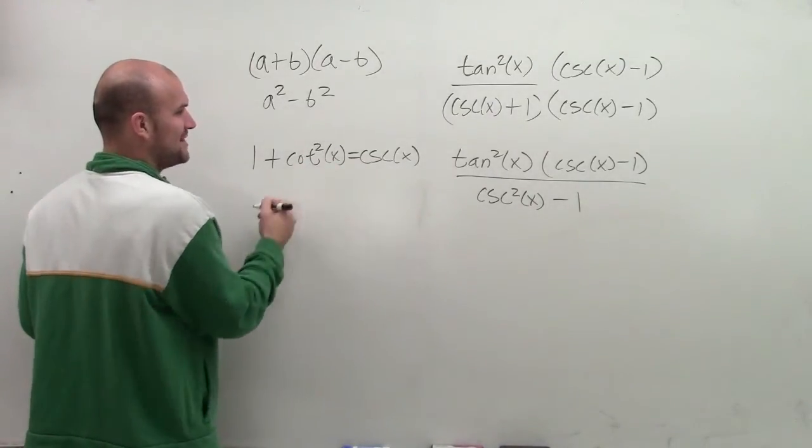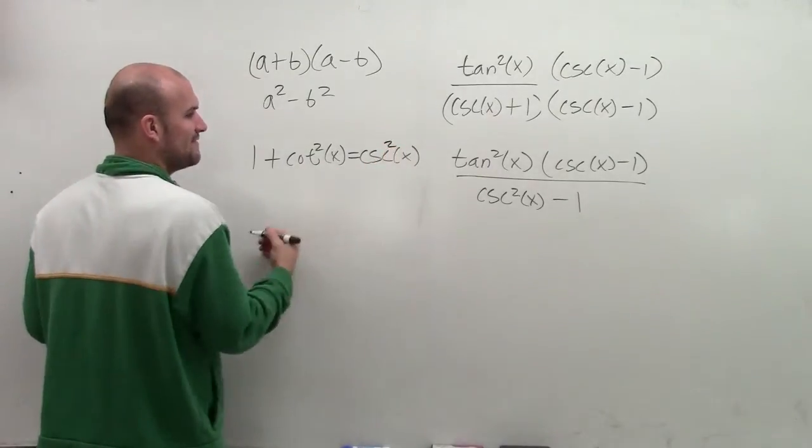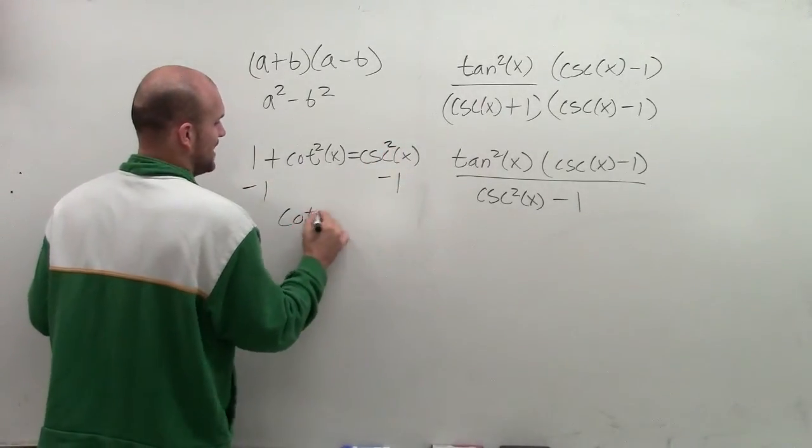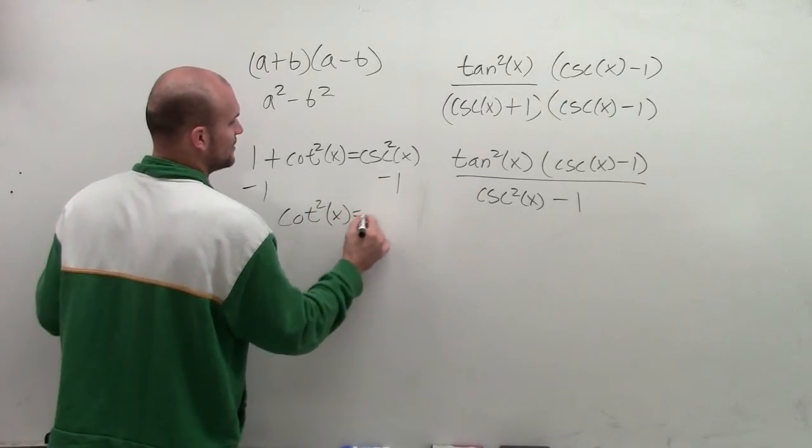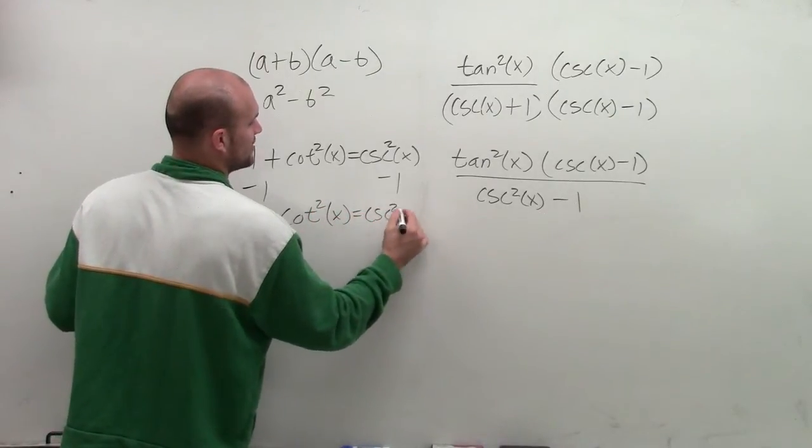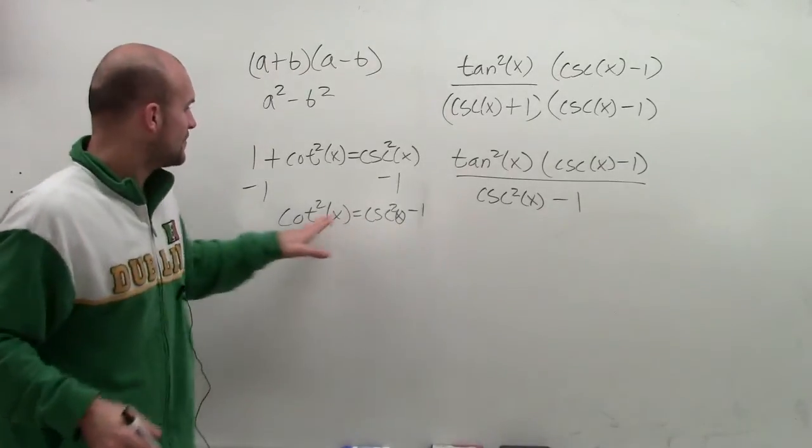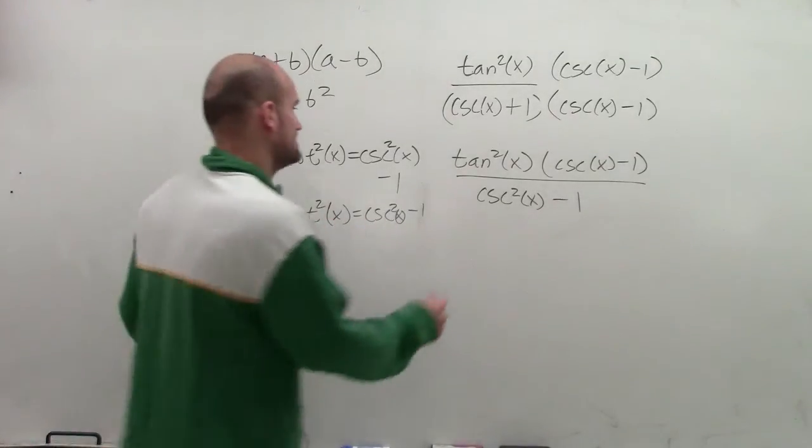So if I want to solve for cosecant squared of x minus 1, I'll just subtract the 1 on both sides. And I get cotangent squared of x equals cosecant squared of x minus 1. So therefore, I can rewrite cotangent squared as my denominator.